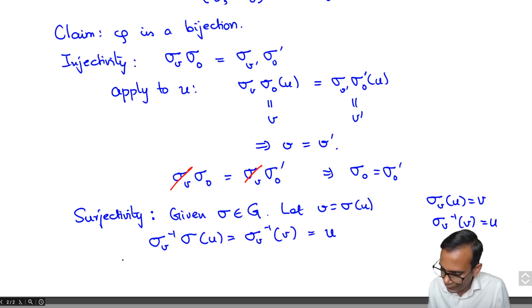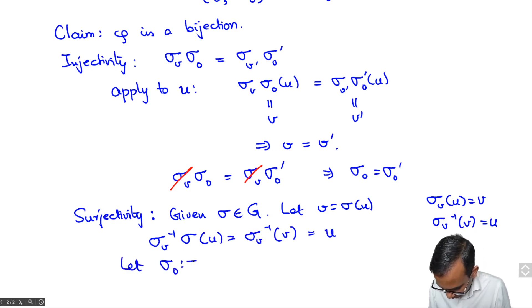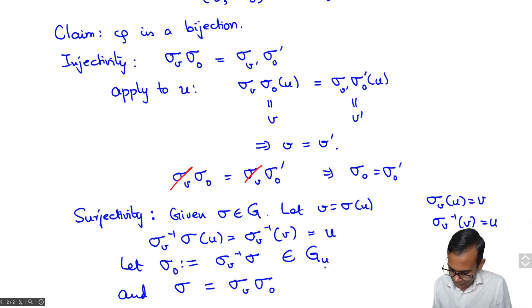So if I let sigma 0 to be sigma V inverse sigma, then this belongs to G subscript U. And moreover sigma is equal to, well we have sigma V inverse sigma is sigma 0, multiplying both sides of this identity by sigma V on the left. What we get is sigma is equal to sigma V sigma 0 showing that phi is surjective.